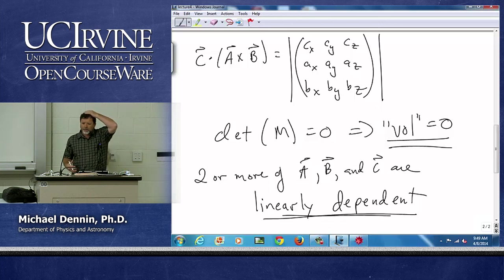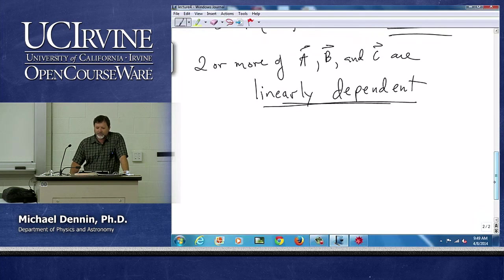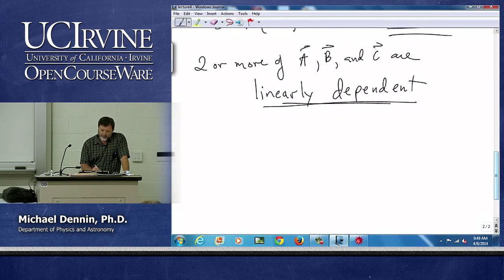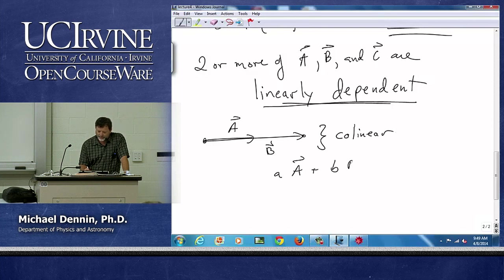Now, we've mentioned this before. We haven't been super specific. But let's define that more carefully, the idea of linearly dependent and linearly independent. If I have two vectors, a and b, and they're collinear, what does that mean about trying to do this?